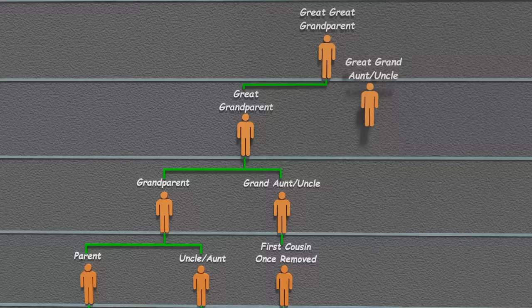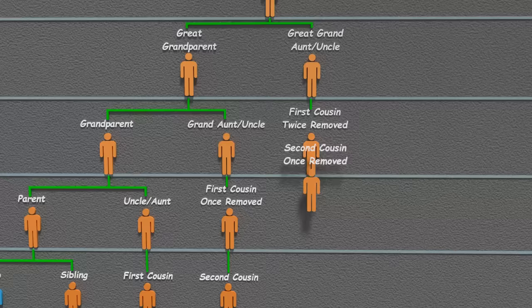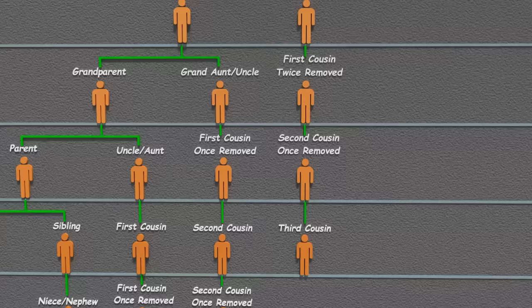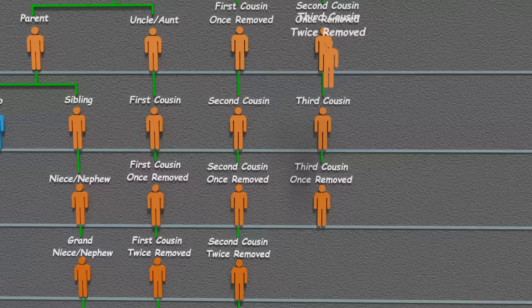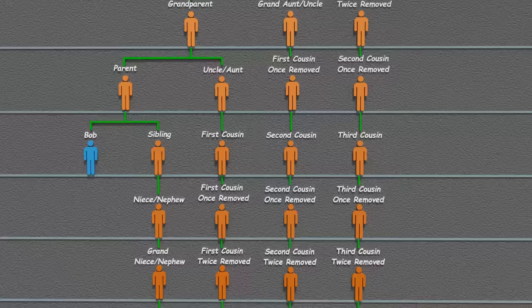We could expand this out again: great-great-grandparent, great-grand-aunt or uncle, first cousin twice removed, second cousin once removed, and third cousin. Below Bob's generation, things are simple — just keep adding one to the removed part: third cousins once removed, third cousins twice removed, and so on.